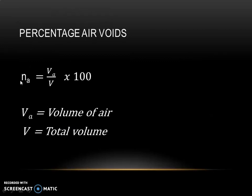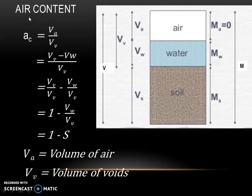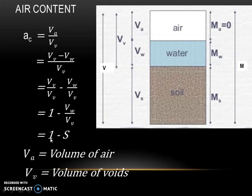Next is percentage air voids, represented by NA. It is the ratio of volume of air to total volume, multiplied by 100. Then is air content, represented by AC. It is the ratio of volume of air to volume of voids. Volume of air can be written, with reference to the three-phase diagram, as VV minus VW. Dividing by VV gives 1 minus VW/VV. Since VW/VV is nothing but degree of saturation S, air content AC is equal to 1 minus S.